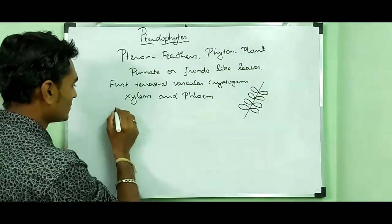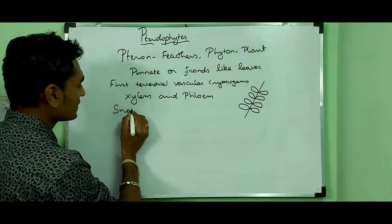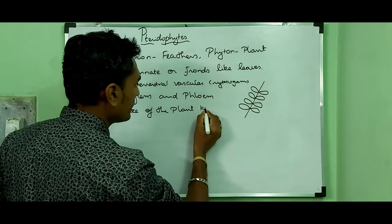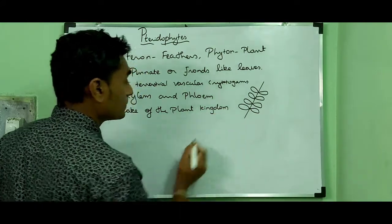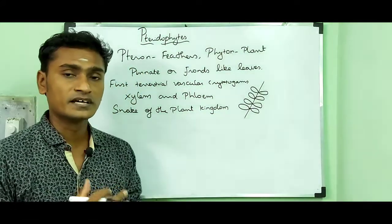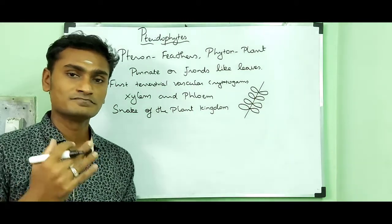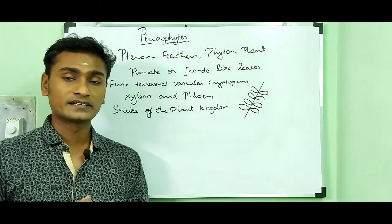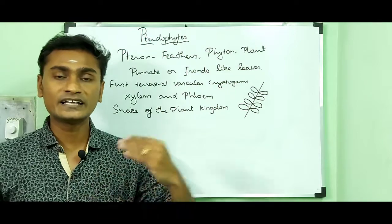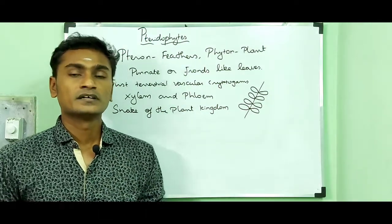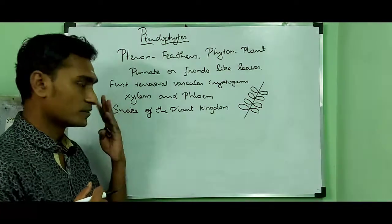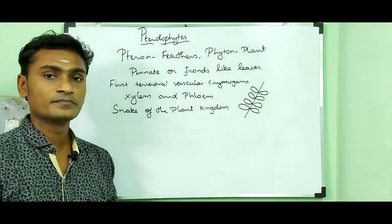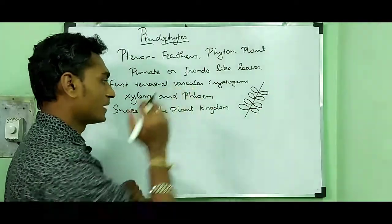Pteridophytes are otherwise called the snake of the plant kingdom. It is believed that pteridophytes evolved from bryophytes. Bryophytes are otherwise called the amphibian of the plant kingdom because they can live in both terrestrial and aquatic environments. That is why pteridophytes are called the snake of the plant kingdom.